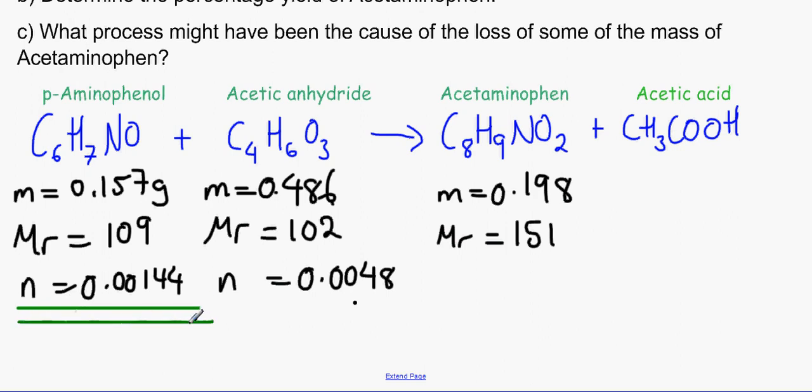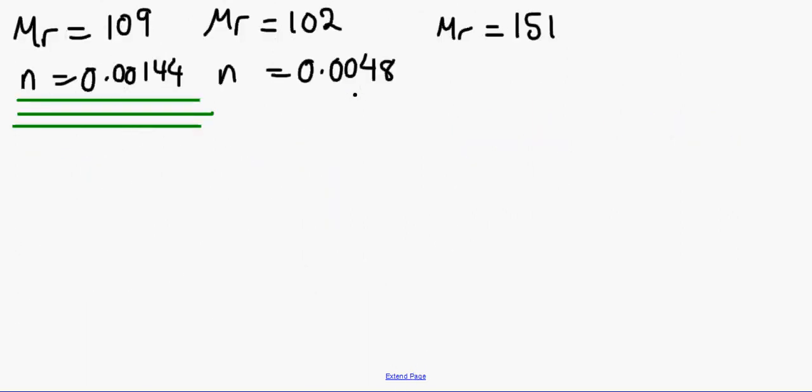0.157 divided by 109 will give us 0.00144. This one number of moles, 0.486 divided by 102, will give us 0.0048. So by comparing the two, we can see that this one over here is our limiting reagent.